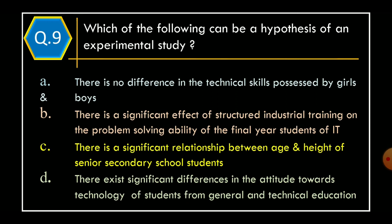Question 9: Which of the following can be a hypothesis of an experimental study? Option A: there is no difference in the technical skills process possessed by girls and boys. Option B: there is a significant effect of structured industrial training on the problem solving ability of the final year student of IT.